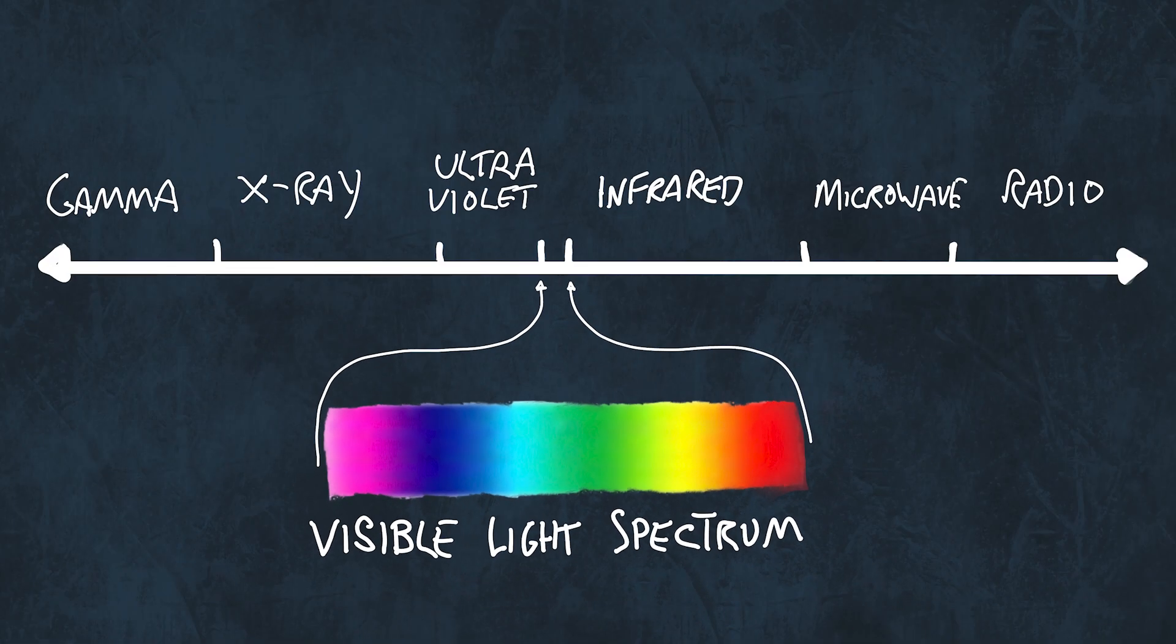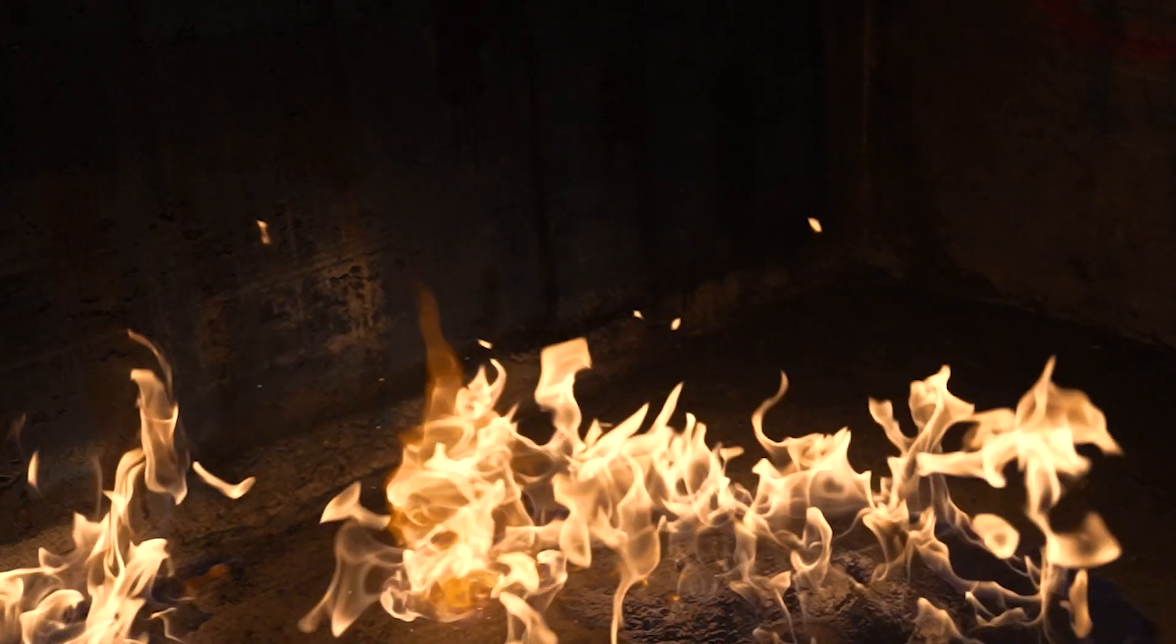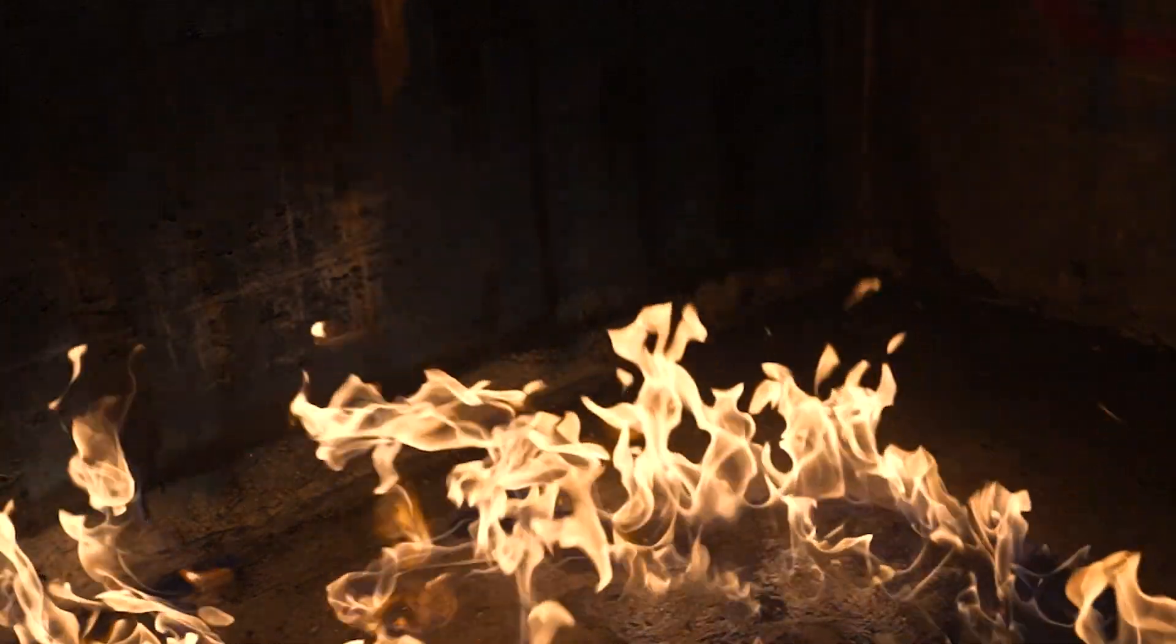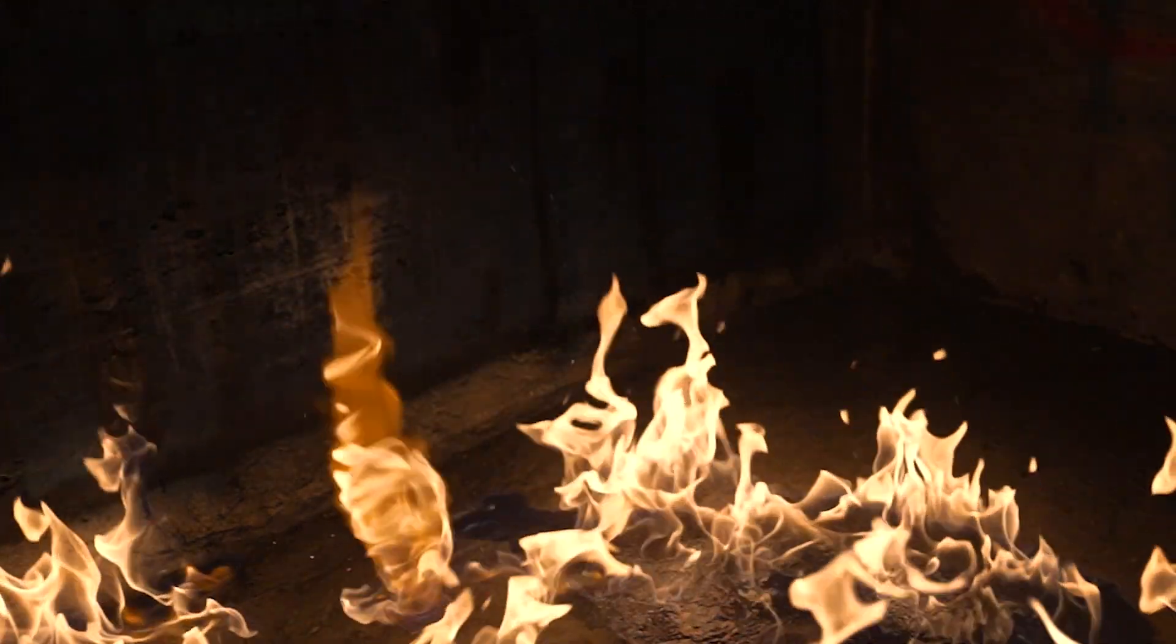And this is the area of electromagnetic radiation that our eyes have evolved to be able to see. And when we're talking about flame colour it is the visible light spectrum that is the most important part for us to focus on.